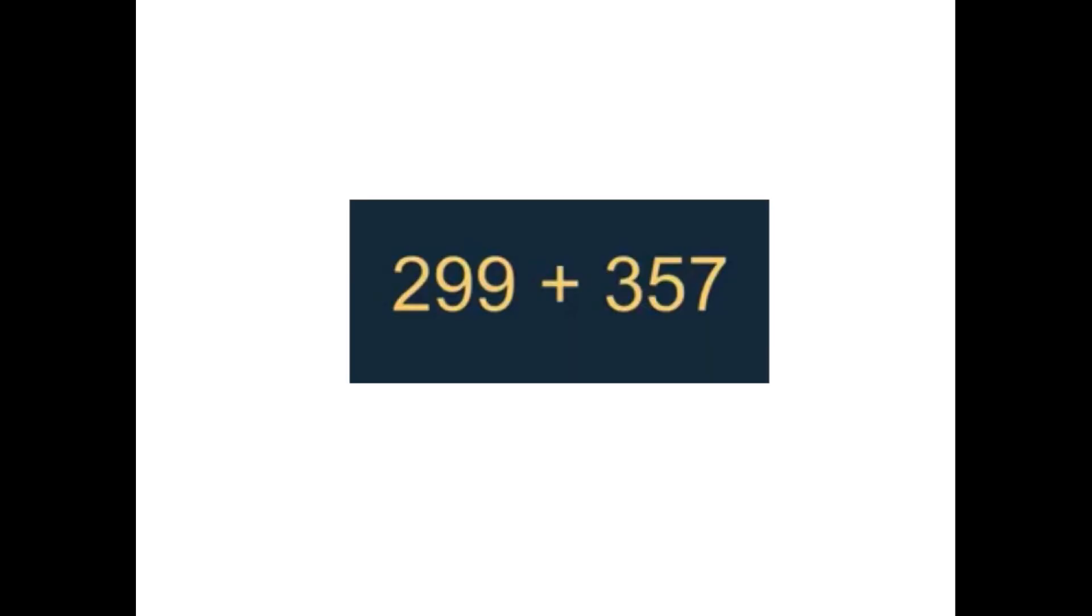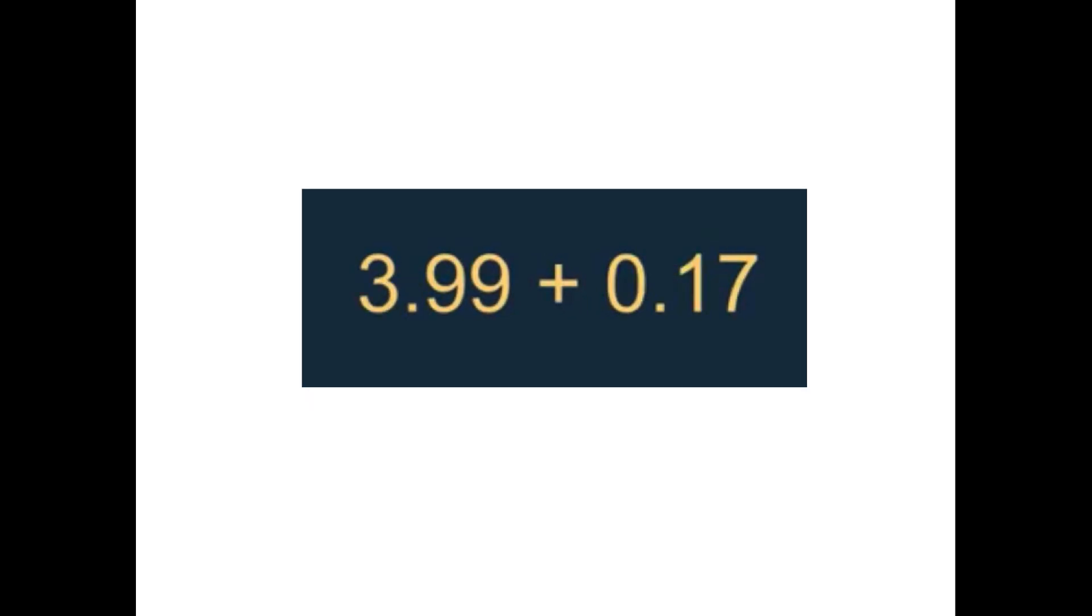Again, when they move on to much more complex calculations later in the school, say two hundred and ninety nine plus three hundred and fifty seven, they know that two hundred and ninety nine is really close to three hundred. I'm just going to borrow one from the other side, complete that tens frame in their head, and then all of a sudden that calculation becomes so much easier. They've even got those number bonds. Three and three makes six. Again, so moving on to decimal points, they can use exactly the same principle here.